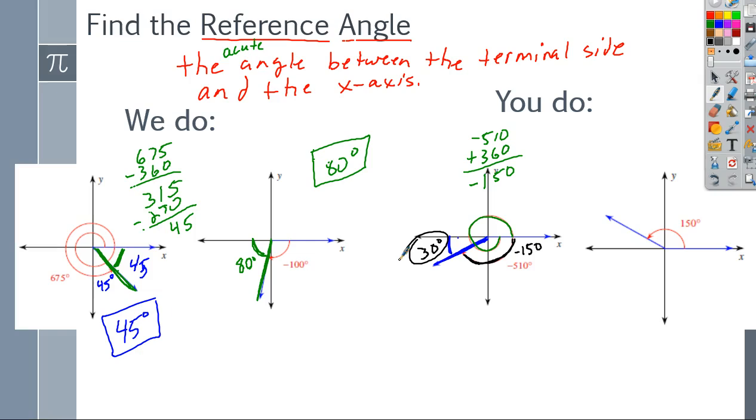This one should be a lot easier. I'm not even going to do it. You should be able to say, hey, again terminal side to x-axis, there's my angle 150. What's left over? It's 30 degrees. There you go.